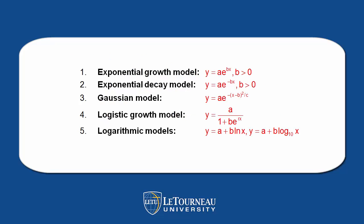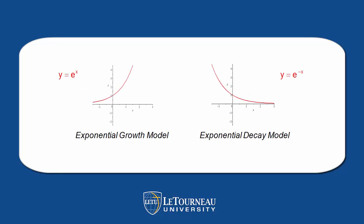The exponential growth model: y equals a times e to the bx. Exponential decay model: a times e to the minus bx. The Gaussian model: a times e to the minus x minus b, squared over c. Logistic growth: a over 1 plus b times e to the rx. And we have two logarithmic models.